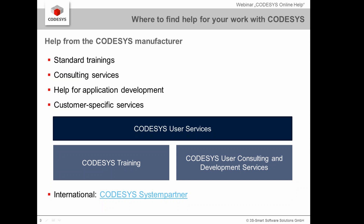You can get help from us as the manufacturer of CODESYS. We provide standard training — for instance on basic programming, object-oriented programming, or CODESYS products like CODESYS UML or CODESYS Motion. We also provide consulting, help for application development, and customer-specific services, such as when you need help for a special project, its structure, or when you cannot develop a plugin for CODESYS on your own.